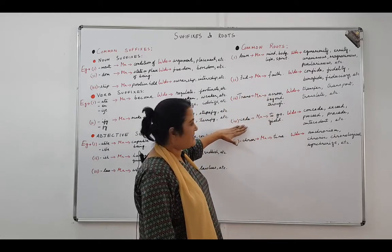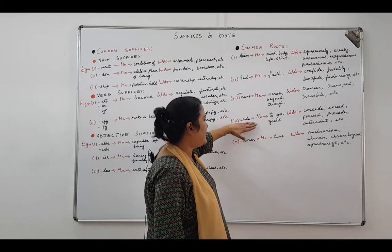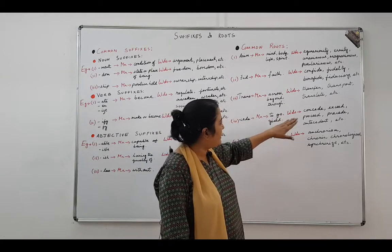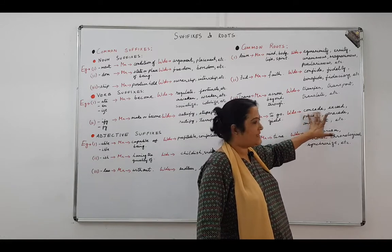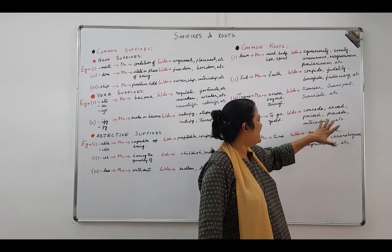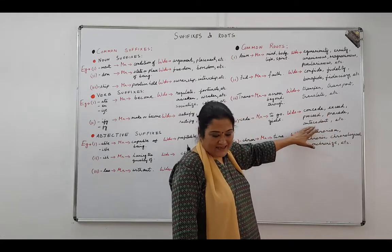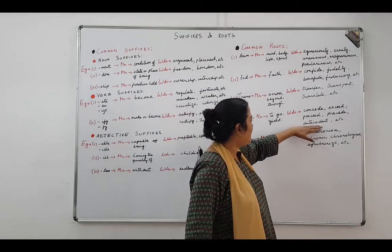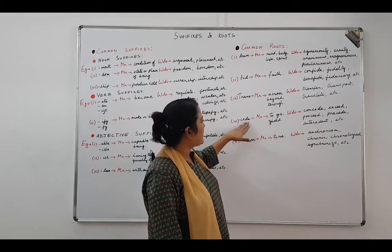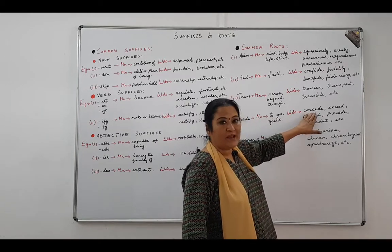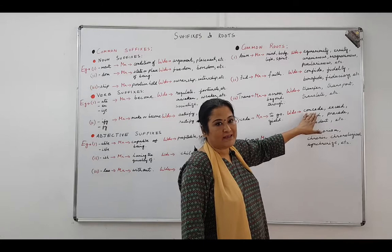The fourth root that we are discussing is c-e-d-e, cede. That means to go or to yield. The words: concede, exceed, proceed, precede, antecedent. Antecedents are things that have come in the past, that have happened before. So all these words have the meaning to go or yield. When you concede something, you let go of certain things. You surrender.